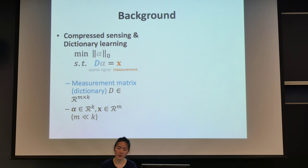Since you guys might not be really familiar with this topic, I'm going to just briefly explain the background knowledge. Compressed sensing is basically solving this optimization problem. Alpha here is an original signal we want to measure, and it is a very sparse signal.